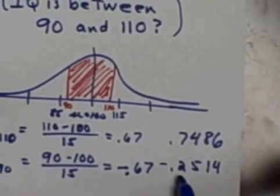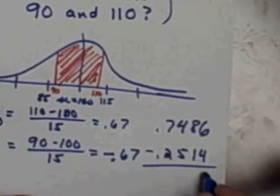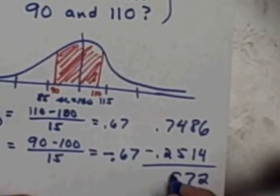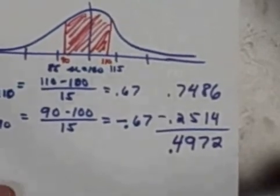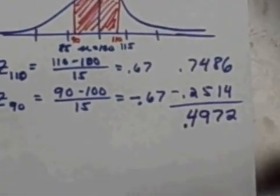If I subtract these two it'll tell me what percent of the area is between them. So when I subtract I get 0.4972 which is pretty close to 50 percent.